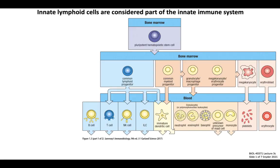We've seen this differentiation plot a few times by now, which summarizes the main lineages of immune cells derived from stem cells in the bone marrow. Up until this point, we've broadly associated lymphoid cells in the blue boxes with the adaptive immune system, and myeloid cells in the red boxes with the innate immune system. Indeed, almost all of the innate immune functions covered in the past two weeks are accomplished by myeloid cells, with the exception of antigen presentation by B cells.